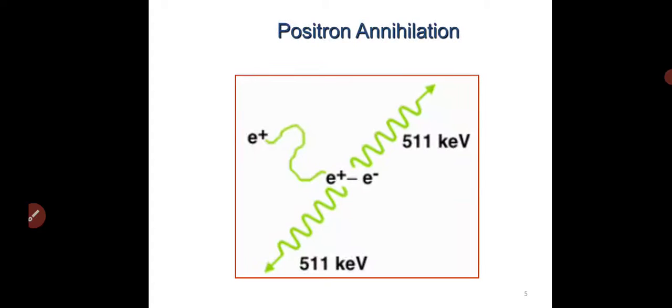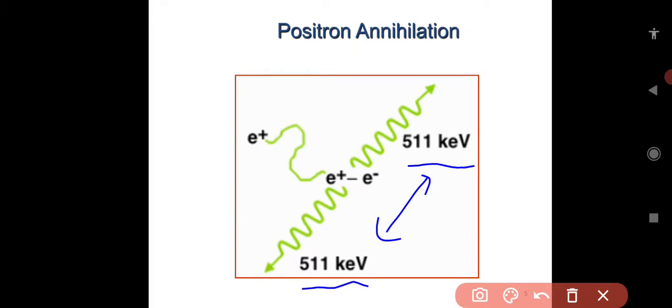This is positron annihilation. We know that annihilation means mass is converted into electromagnetic radiation of energy. Here there are two possibilities. Charge is different but mass of both electron and positron remain same. Electron having mass 511 keV and positron also having 511 keV undergo annihilation or collision, which gives emission of photons.